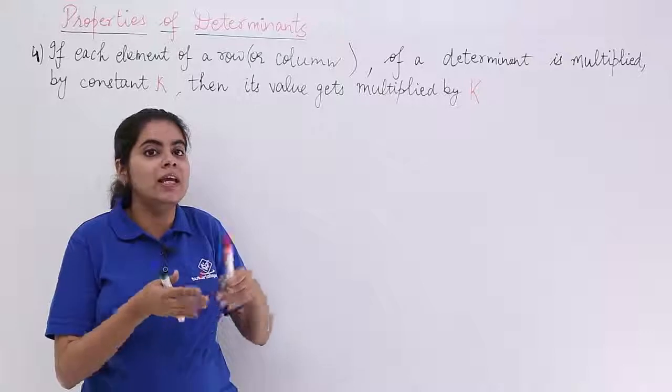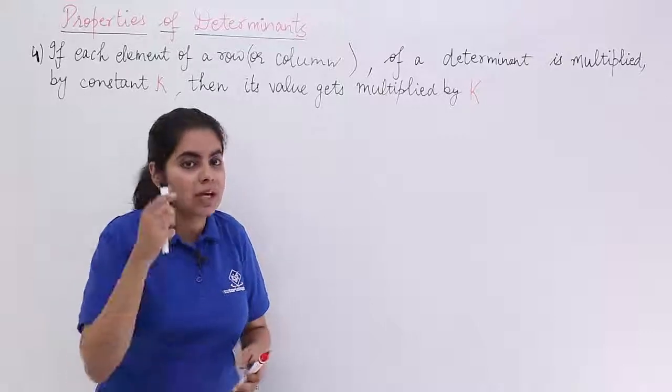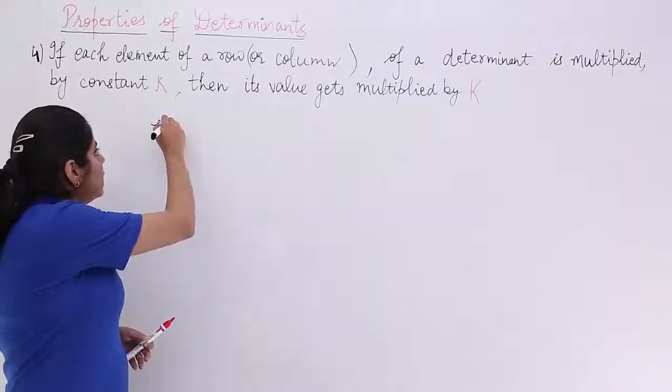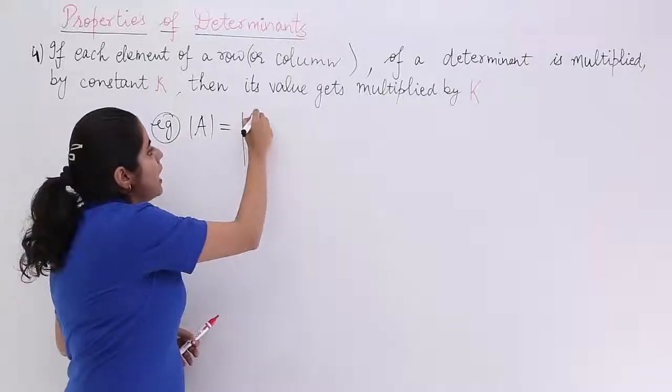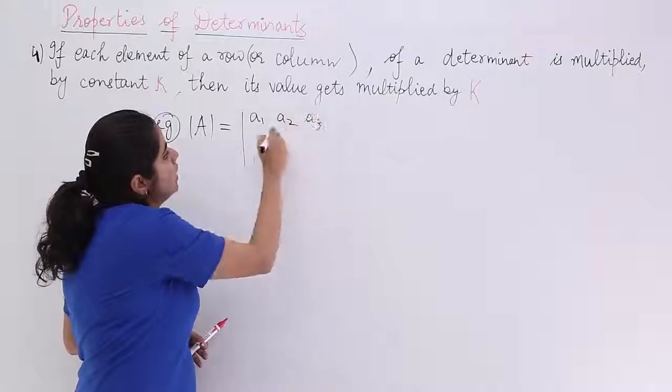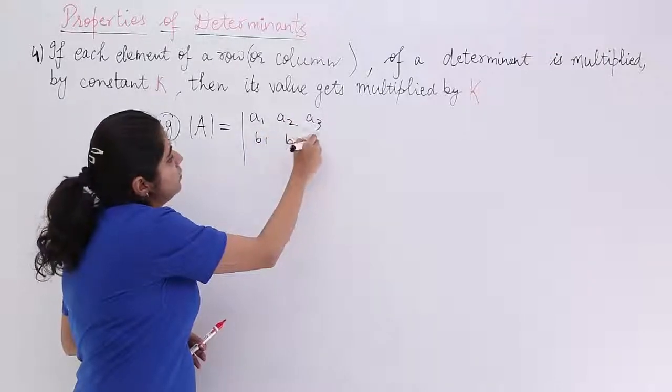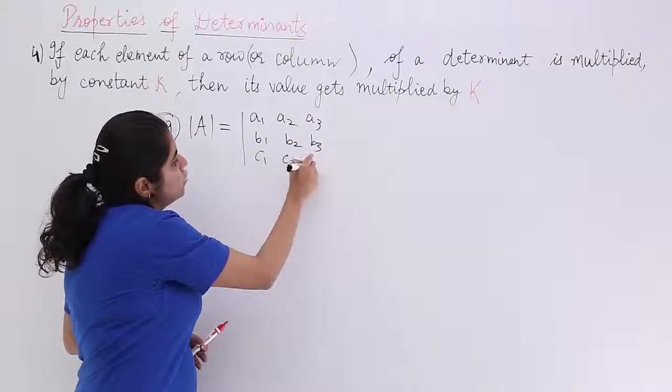If not understood, don't worry, we are going to see it in detail. Now, what is actually the property saying? We have a determinant A and it has elements as A1, A2, A3, B1, B2, B3, C1, C2, C3.